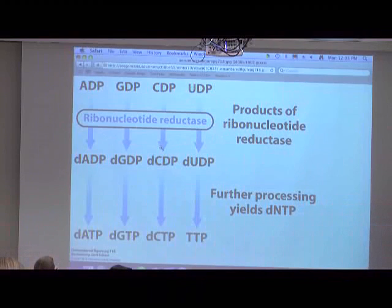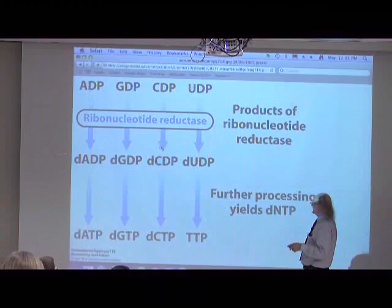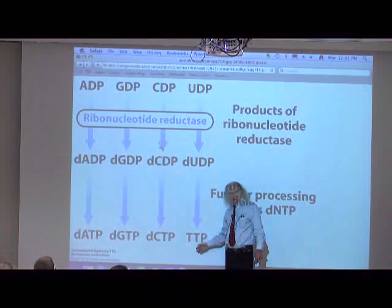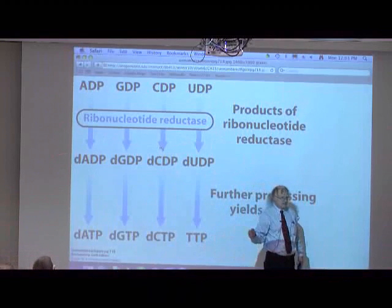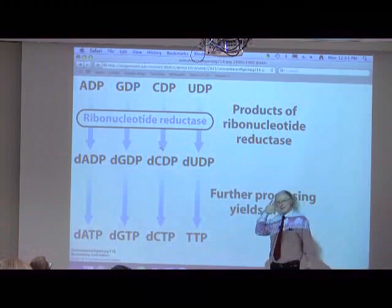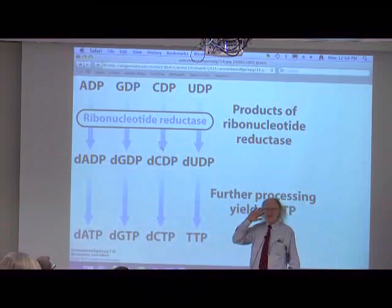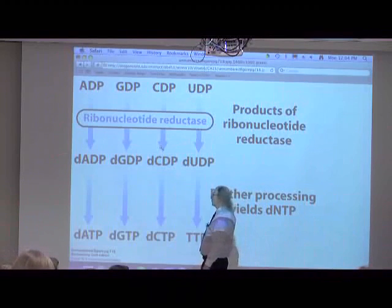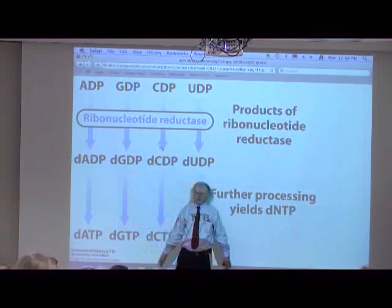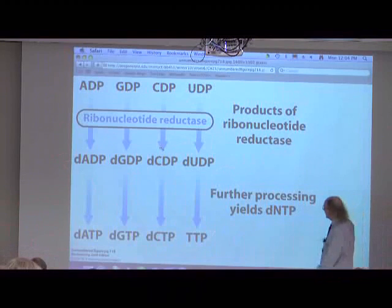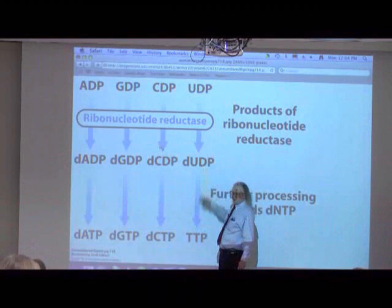Ribonucleotide reductase is the enzyme that does that conversion. We're starting with diphosphates and getting deoxyribonucleoside diphosphates. Then we go from the deoxyribonucleoside diphosphates into the deoxyribonucleoside triphosphates using NDPK — nucleoside diphosphate kinase. NDPK, which takes GDP to GTP for example, also takes dGDP to dGTP. It converts all diphosphates into all triphosphates.